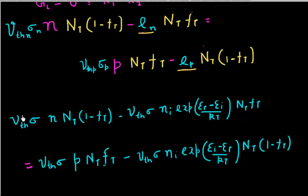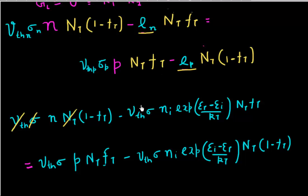I see a lot of things coming out to be common, so I cross those terms out. Vth is in all of the expressions, capture cross section is in all of these terms, and similarly the trap density Nt is in all of these terms. So these three terms just vanish from each of these expressions.